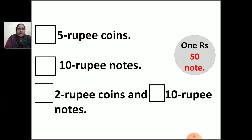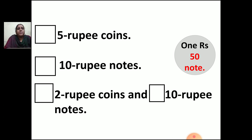So you have to calculate and then write the correct answer in the square. Now let us start doing the first sum. Dash 5 rupee coins — how many 5 rupee coins will you take to make a 150 rupee note? To make 150 rupees, how many 5 rupee notes should you have?